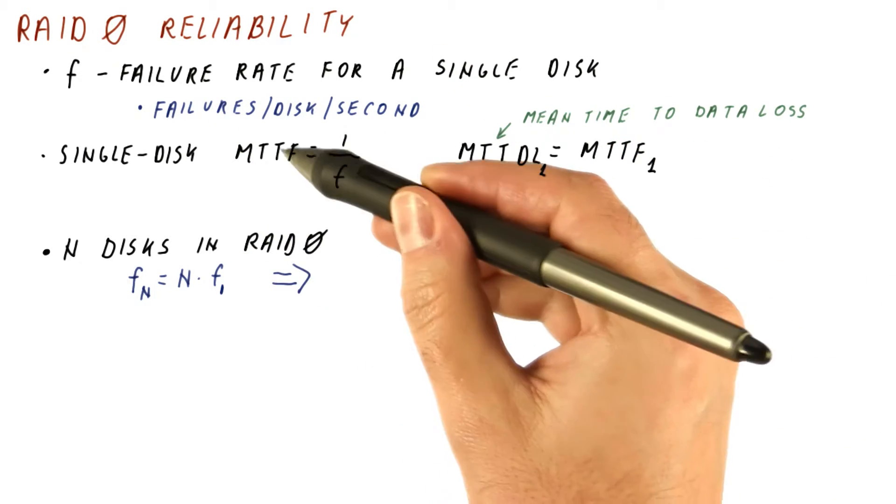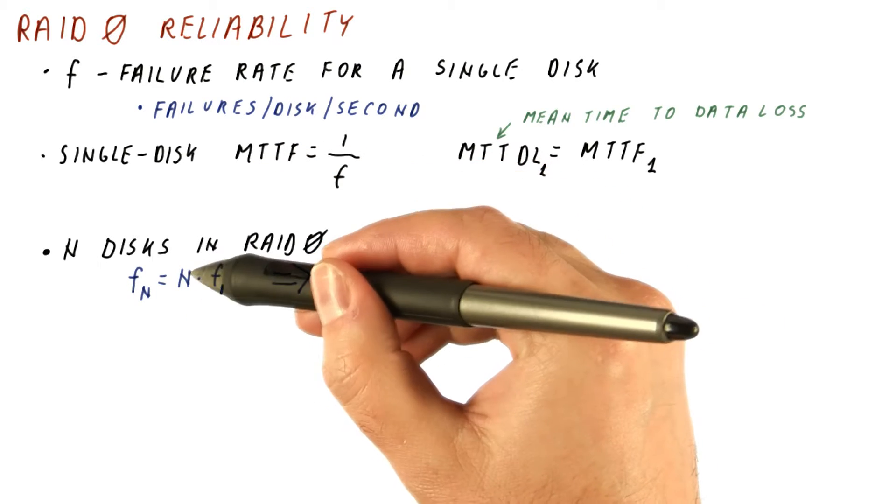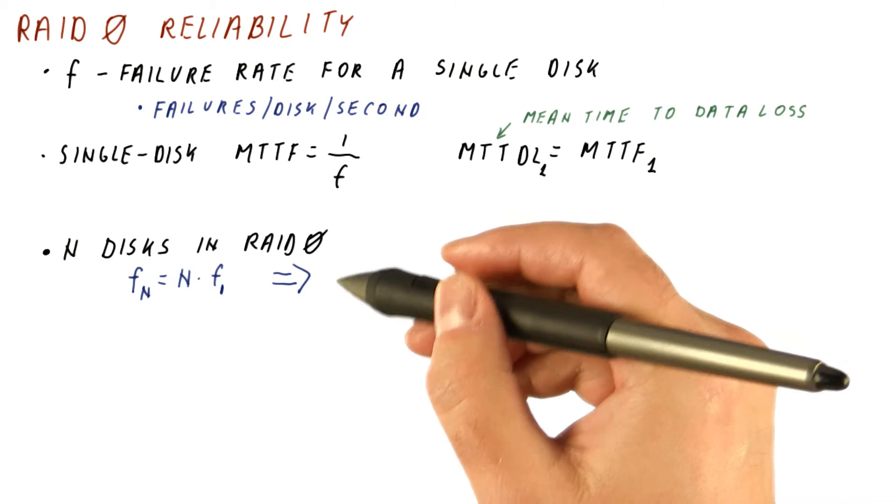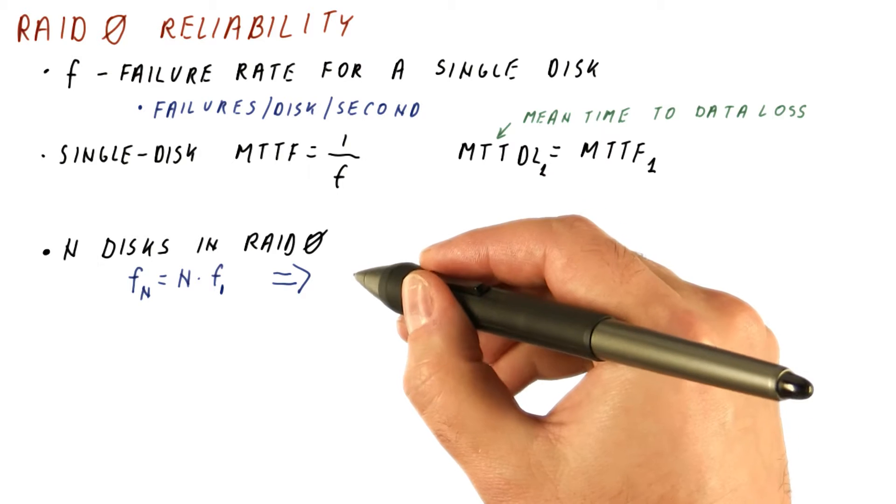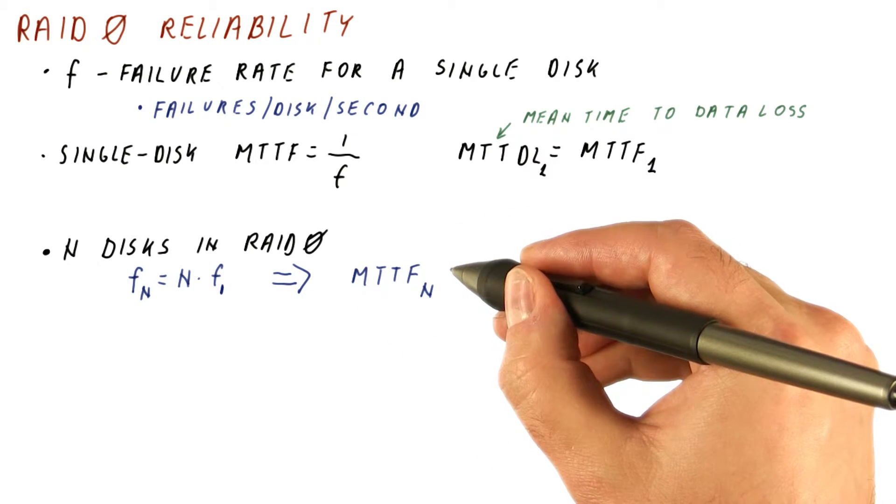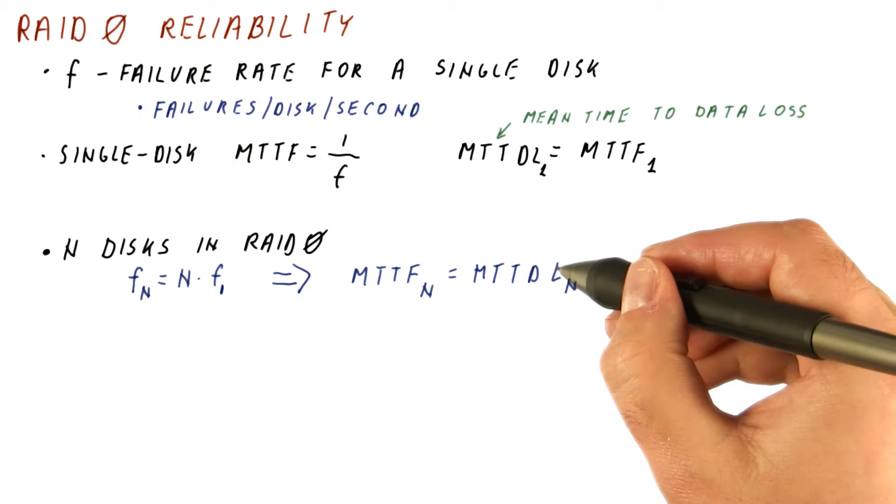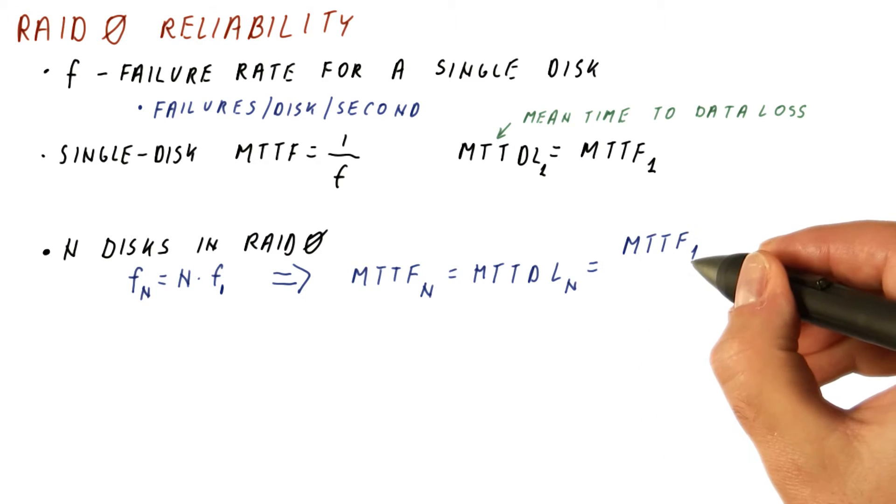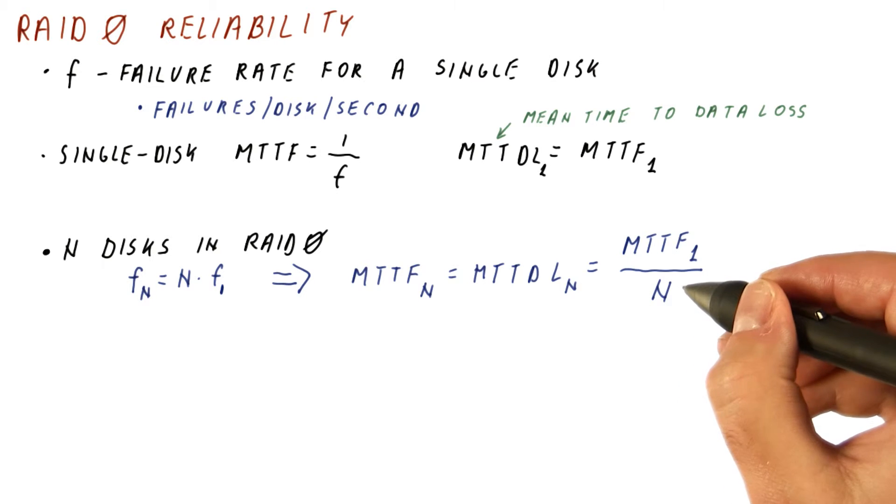It also turns out that the mean time to the first failure among n working disks has the same distribution as the first failure for the single disk. So we get that MTTF for n disks in a RAID 0 configuration, where MTTF is really the mean time to data loss in this case, is equal to the MTTF of one disk divided by n.